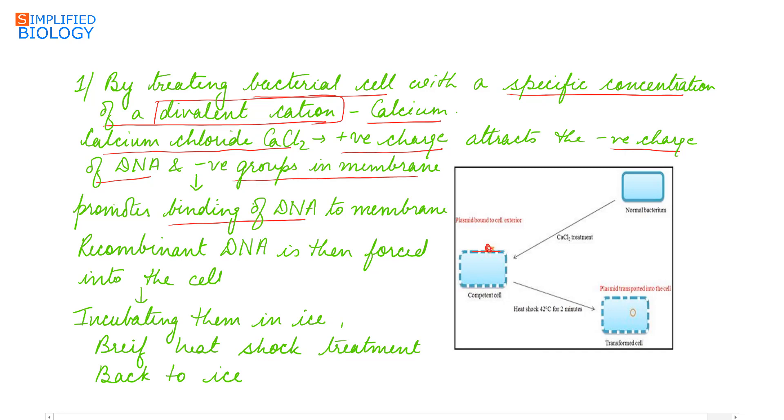This recombinant DNA is then forced into the host cell by incubating them in ice followed by a brief heat shock treatment, that is at 42 degrees celsius for two minutes, and then they are transferred back to ice.